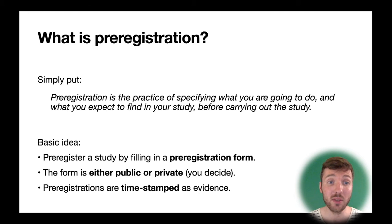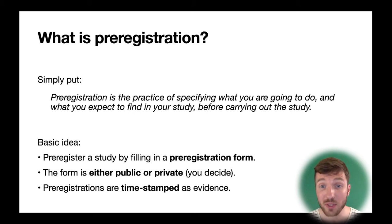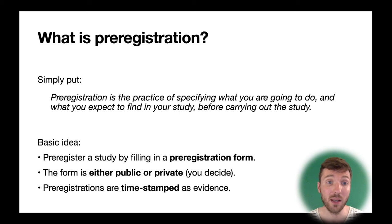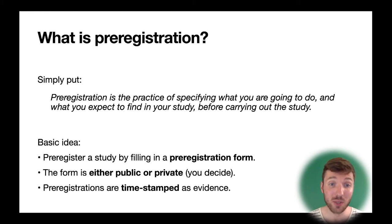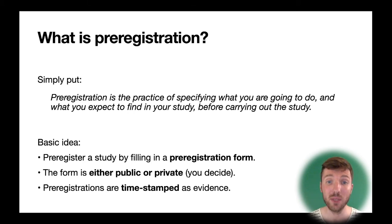The basic idea is that you pre-register your study by filling in a pre-registration form, where you write down your research question, your hypotheses, the methods, and so on. The form is then either made public immediately, or you can keep it private until you decide to publish it. Pre-registrations are also timestamped as evidence that you pre-registered your study before carrying out the research.